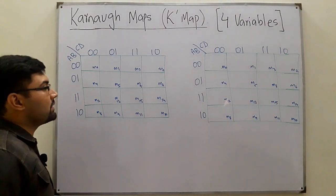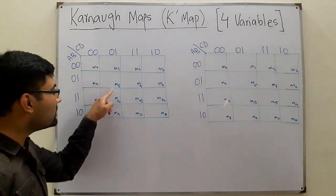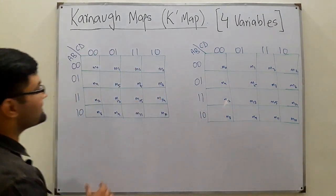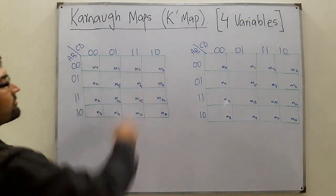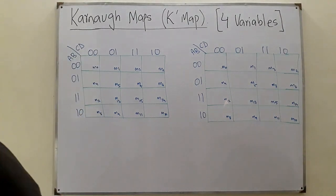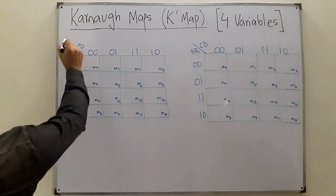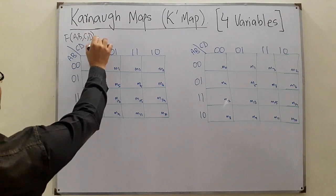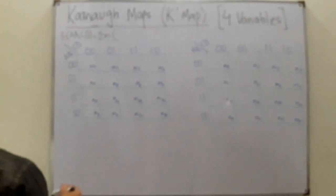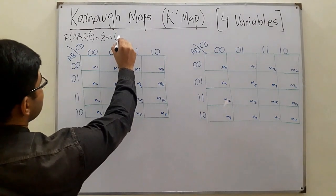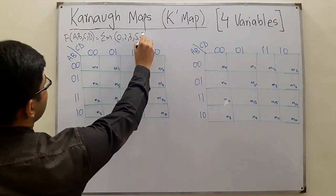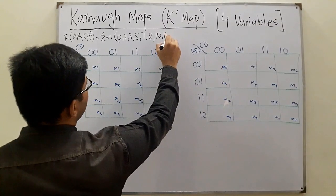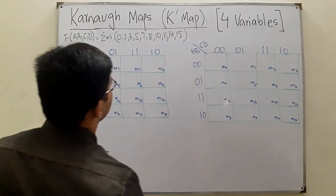Now let's look at more examples. The minterm designations are written on the map for reference. Question: F(A, B, C, D) = summation of minterms 0, 2, 3, 5, 7, 8, 10, 11, 14, 15. Pause the video and try to solve it before checking the solution.